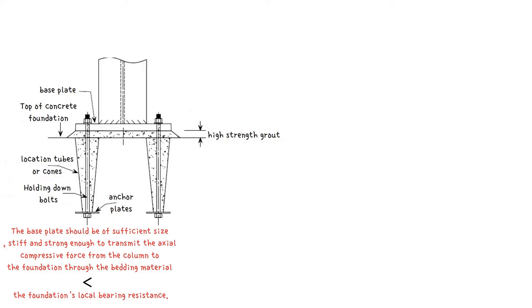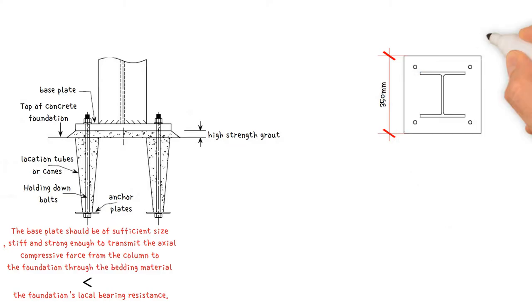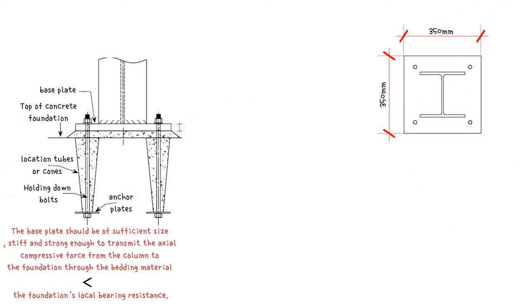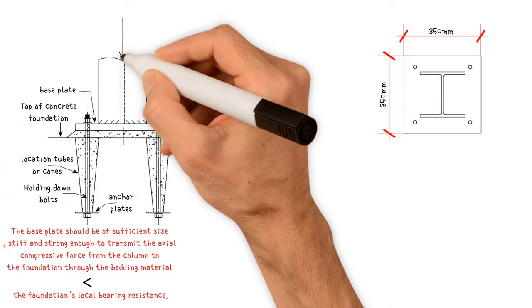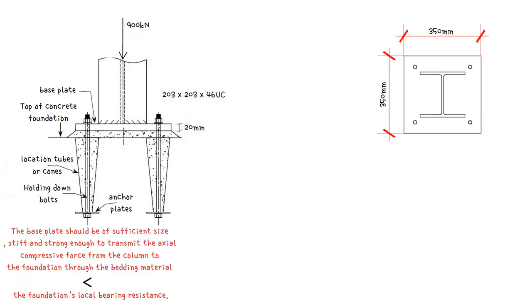Let's start with a practical example. We need to check the size of baseplate 350 by 350 by 20 millimeters is sufficient to support a UC column 203 by 203 by 46, subject to a design load of 900 kilonewtons.